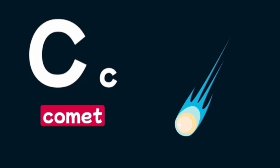C is for comet, a moving object in space made of dust, gas, and a tail.